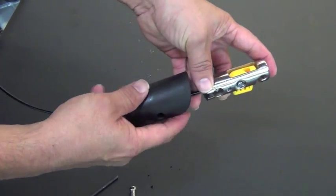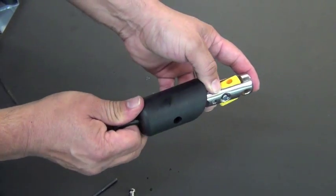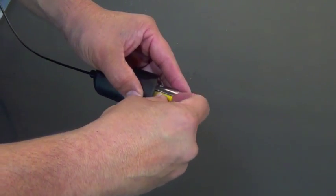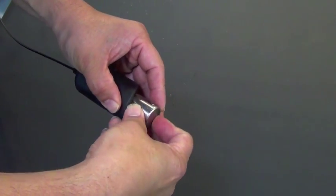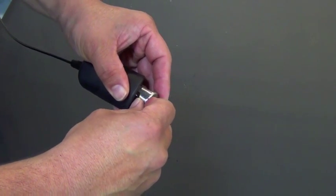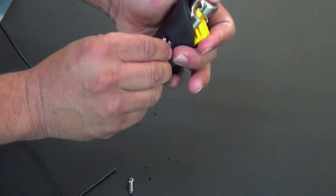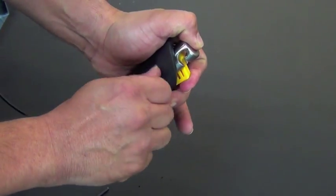Now reinsert the component into the housing. Reinstall the spring by applying pressure to the top of the spring, pushing it down into the spring seat as you reinsert the component into the housing. Release only after the spring has slid under the body housing.